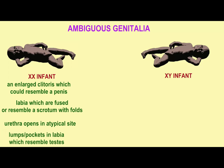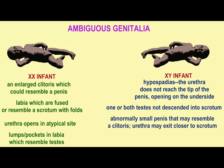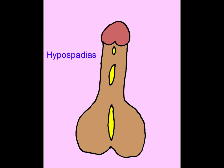Lumps or pockets in the labia which would resemble testes located in a scrotum. In an XY infant, ambiguous genitalia could include hypospadias, the condition in which the urethra does not reach the tip of the penis, opening instead on the underside of the penis. One or both testes may not be descended into the scrotum.